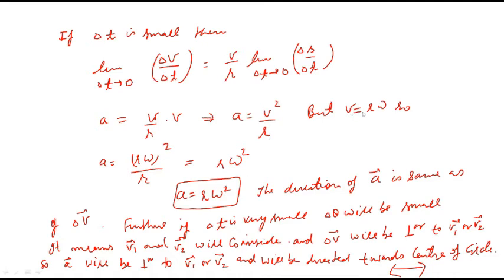We also know that v equals r omega. So substituting, a equals r omega squared. The centripetal acceleration can be written in terms of magnitude as a equals v squared upon r or a equals r omega squared. Since acceleration is a vector quantity, its direction is the same as the direction of the delta v vector.